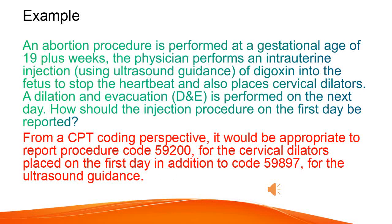An abortion procedure is performed at a gestational age of 19 plus weeks. The physician performs an intrauterine injection, using ultrasound guidance, of digoxin into the fetus to stop the heartbeat and also places cervical dilators. A dilation and evacuation (D&E) is performed on the next day. How should the injection procedure on the first day be reported? From a CPT coding perspective, it would be appropriate to report procedure code 59200 for the cervical dilators placed on the first day, in addition to code 59897 for the ultrasound guidance.